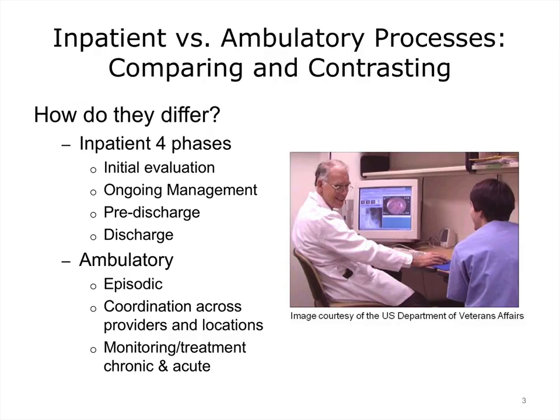How do inpatient and ambulatory differ? The process of inpatient care can be conceptualized very generally as having four phases: initial evaluation, ongoing management, pre-discharge, and discharge phases. The ambulatory care process differs in that it is episodic, may require coordination among providers at different locations using different records, and may address the monitoring and treatment of ongoing chronic conditions in addition to acute ones. Each encounter type requires that HIT be applied in different ways, but fundamentally there is still much in common.